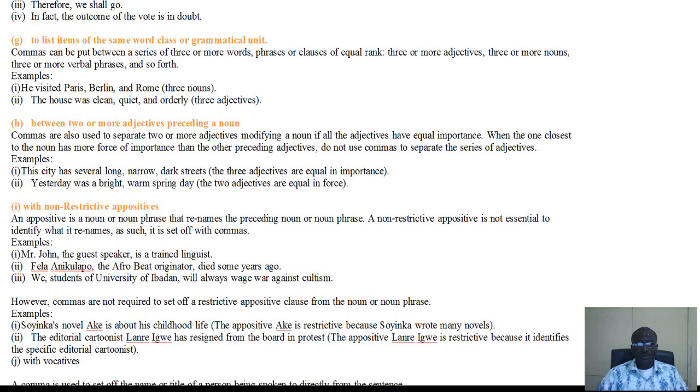A comma is also used to list items of the same word class or grammatical unit. In other words, when you have a list of whether their words, their phrases, their clauses, and they are of equal rank, or you have adjectives, or you have nouns, or you have verbal phrases, then you require the use of a comma. An example: You visited Paris, Berlin, and Rome. Or again: The house was clean, quiet, and oddly.